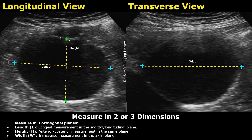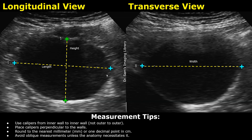Then, in the transverse plane, the width can be measured. It is the horizontal measurement in the transverse or axial plane. For measuring cysts, place the calipers at their inner walls, not the outer walls, and try to place them perpendicular to the walls. You can round off the measurement to the nearest millimeter or one decimal point in centimeters.